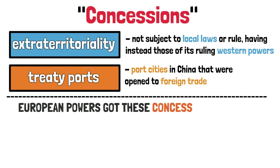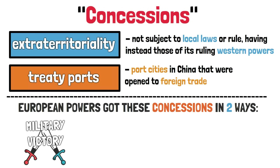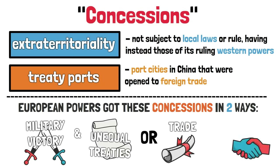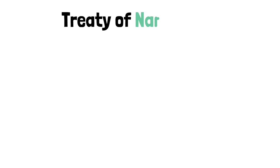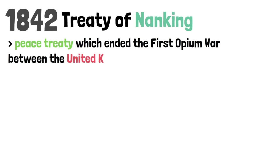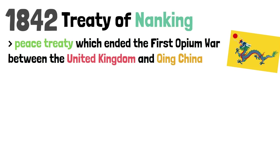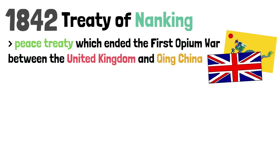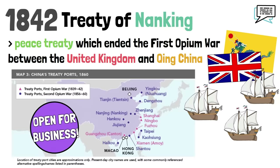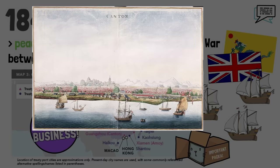The ways in which European powers were able to hold these concessions were two: either through military victory over the Chinese, forcing the concessions through unequal peace treaties, or through trade deals which were also somewhat beneficial for the Chinese and which took place with their consent. It all began with the Treaty of Nanking in 1842, a peace treaty which ended the First Opium War between the United Kingdom and Qing China. After defeating the Chinese, the British forced them to open up their ports to external trade.